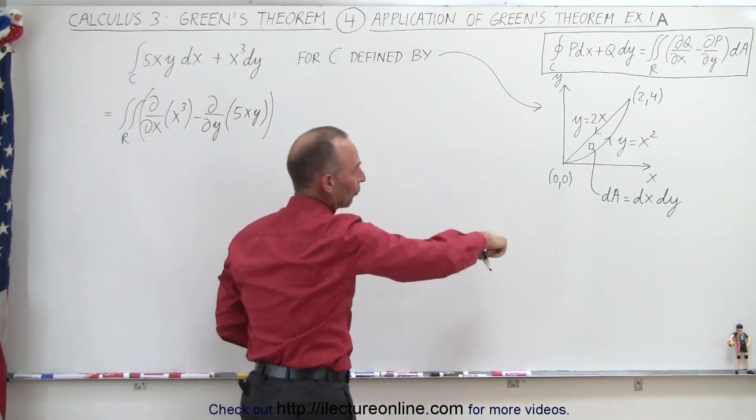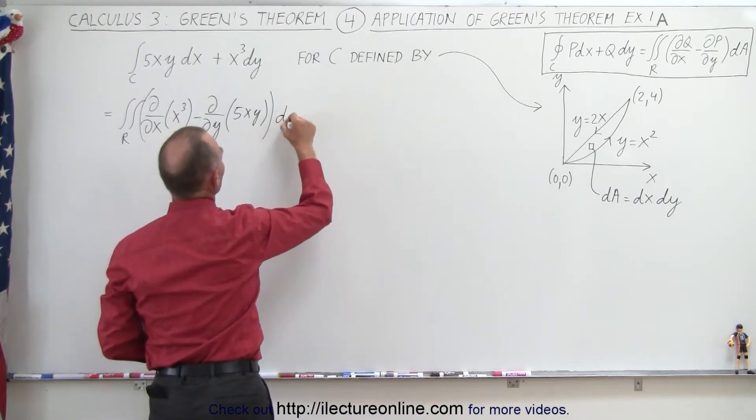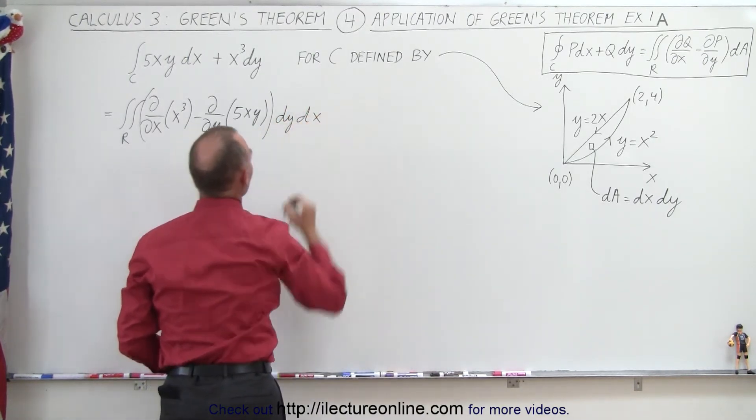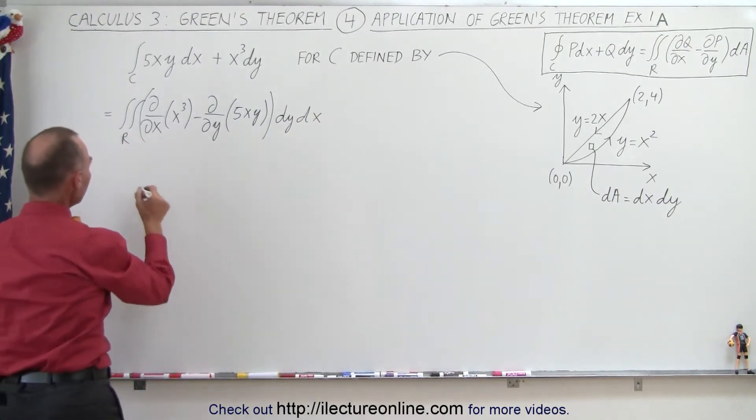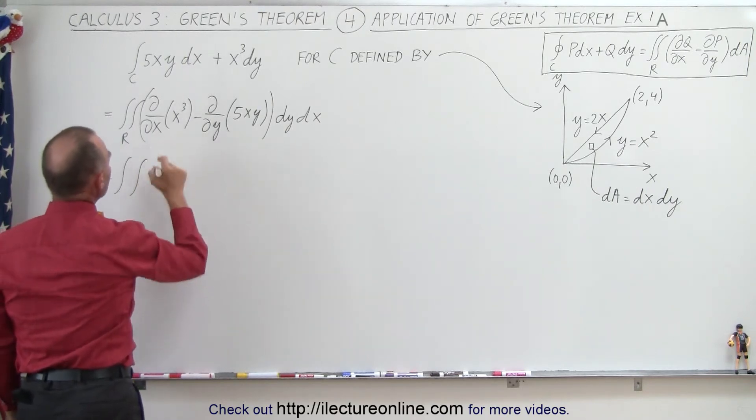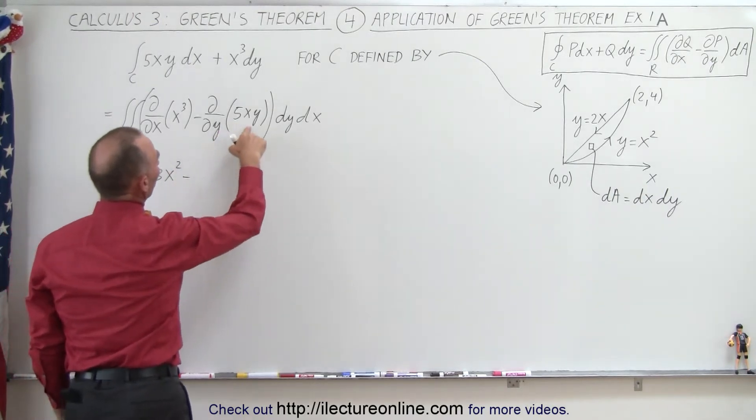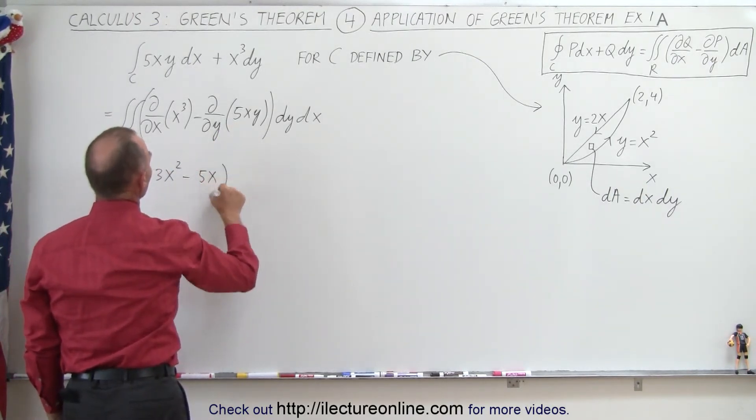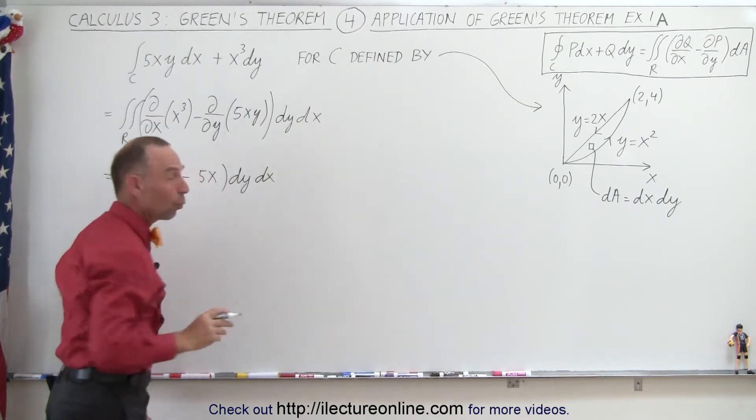And this whole thing is then times dA. In this case we're going to integrate over in the y direction first and the x direction. So let's write dA is dy times dx, and we'll plug in the limits of integration in just a moment. So this is equal to the integrals. This will be equal to 3x² minus, here with respect to y, that will give us 5x times dy times dx.